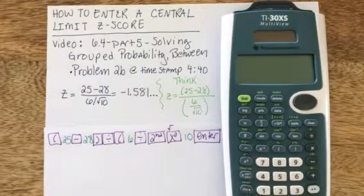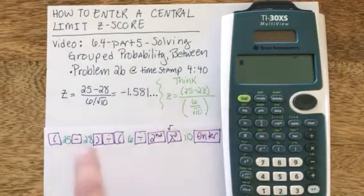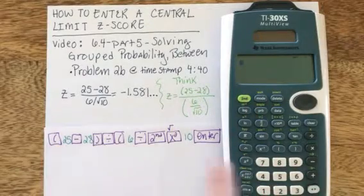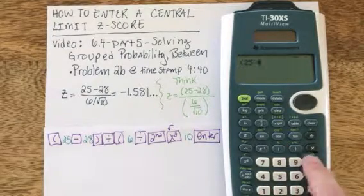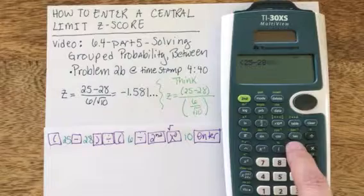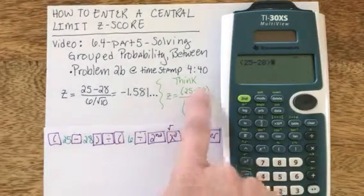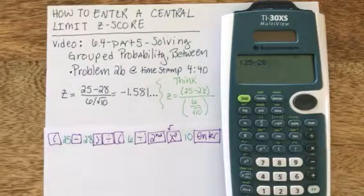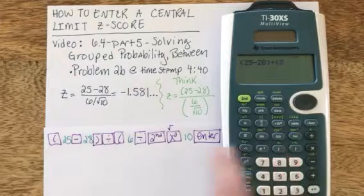First thing I need to do is turn my calculator on. I see my blinking cursor, and I'm ready to start with a parenthesis located right above the 8 button. So parenthesis 25 minus 28, right parenthesis off to the right side, looks identical to my numerator. Divide, and now I start another parenthesis to indicate the denominator has begun.